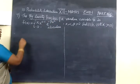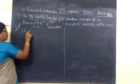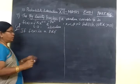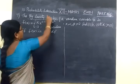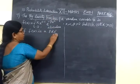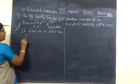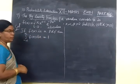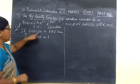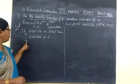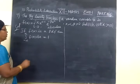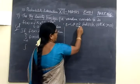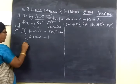We already know from the previous class: if F of X is a probability density function (PDF), then the integral from minus infinity to infinity of F of X dx equals 1. Now we apply this. Here the limit is given as X greater than 0, so the limits become 0 to infinity instead of minus infinity to infinity.